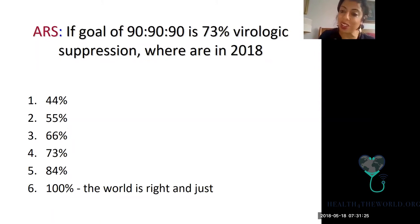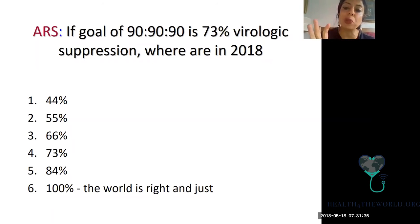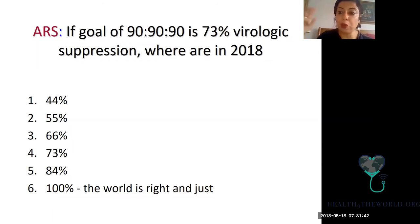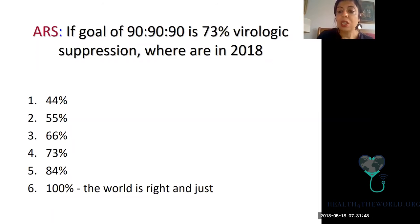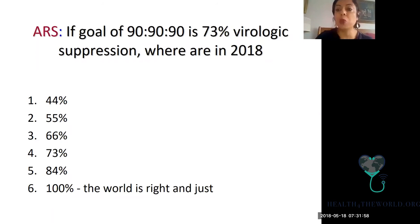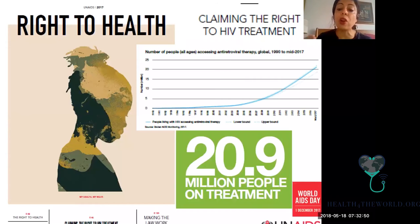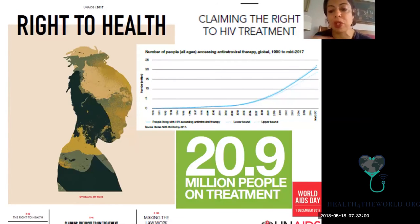90-90-90, if you multiply those together, is 73%. So we should have a 73% virologic suppression rate — meaning no virus detectable in the plasma of 73% of those living with HIV worldwide. So where are we now in 2018? Are we at 44%, 55%, 66%, 73% — having reached the 90-90-90 targets — or at 84%, or have we reached full virologic suppression? Where are we now in 2018 with achieving the goals of therapeutics worldwide?